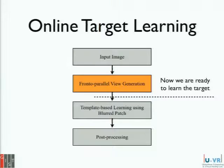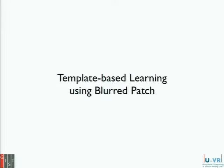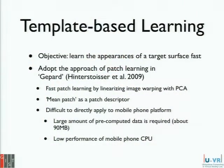Until now I explained how we get the frontal parallel view of the target object using accelerometer sensors, and now we are ready to acquire some template data from the target for detection. The next part is template-based learning using blurred patches. The objective of this template-based learning is to acquire data from the textures of the frontal parallel view we made in the previous step.